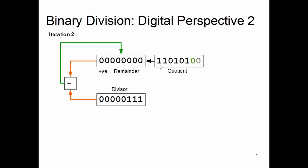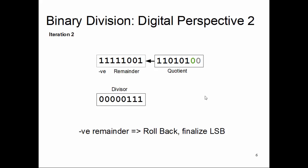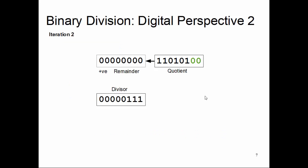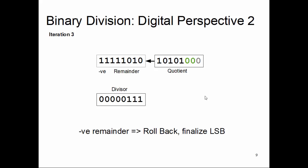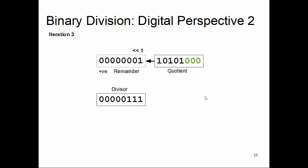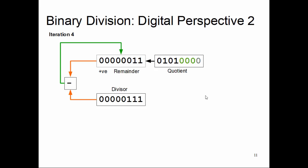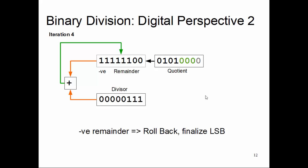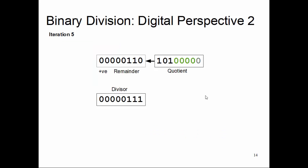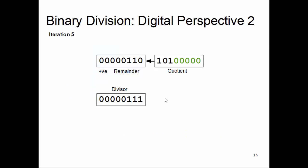At iteration two the result is still negative, so we roll back and finalize the LSB. Iteration three subtraction is also negative — roll back and finalize the LSB. Iteration four: subtraction is negative again, roll back, finalize LSB, and one more shift on the quotient register towards the remainder. We are gradually bringing the dividend into the remainder register.